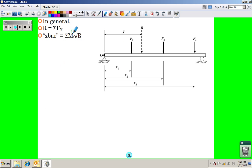So looking at this, we say that in general, R is equal to the sum of the forces in the Y direction, and X-bar is equal to the sum of the moments divided by R. Now you'll notice this R is going to be a negative number. The sum of the moments, you need to keep track of the sign, whether it's positive or negative.